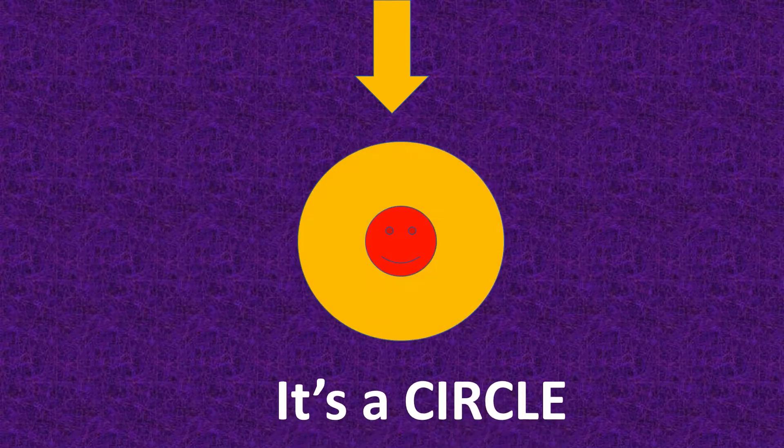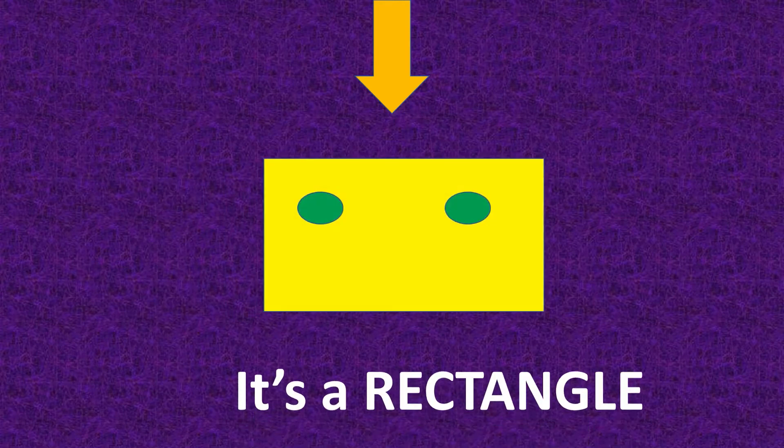What shape is it? It's a circle. What shape is it? It's a rectangle.